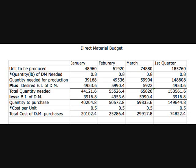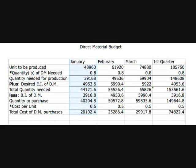The formula for the direct materials budget is: quantity of direct materials needed for production, plus desired direct materials ending inventory, equals total quantity of direct materials needed. Then subtract direct materials beginning inventory to get quantity of direct materials purchased. For example, in January we took the 48,960 units produced and multiplied by 0.8 red vines needed per unit, equaling $39,168, which is the quantity needed for production.